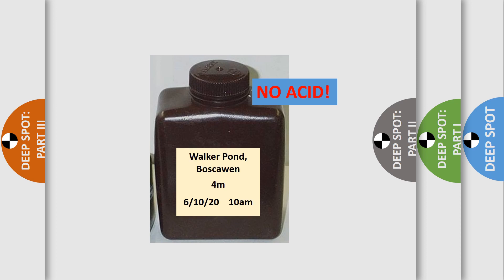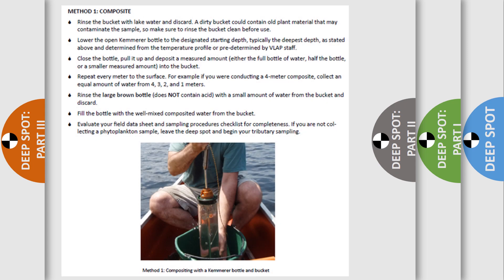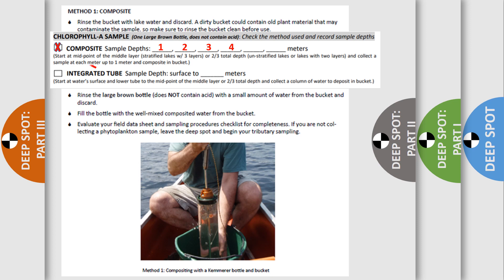There are two methods you can use. The first method is the composite method. This is recommended for lakes where your chlorophyll A sample is collected from a depth of 4 to 5 meters or less. The composite method collects water from different depths and mixes them in a bucket. For example, if your starting depth is 4 meters, you'll collect a Kemmerer bottle of water from 4, 3, 2, and 1 meter and mix the water from all four depths in the bucket. Indicate on your field data sheet which method you're using and the depths your sample is collected at.